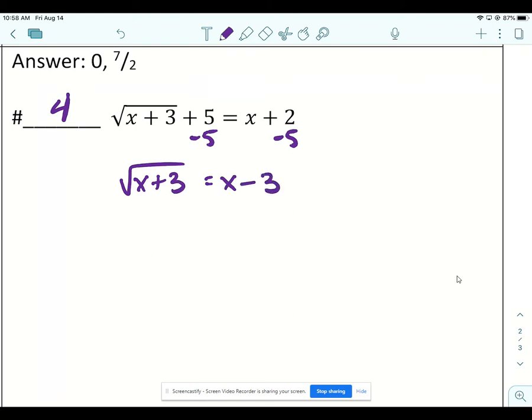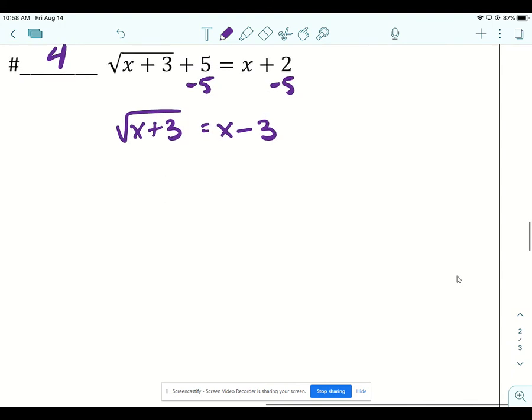Okay, and then once that radical is isolated we are going to square both sides. You have to be really careful on the right. The left is easy, the square root cancels out the square root.